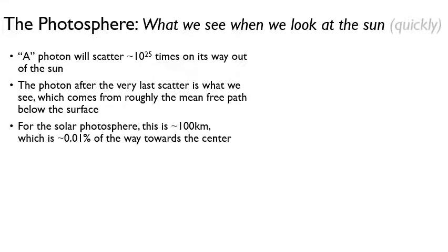If you consider the sun, the solar photosphere, this is about 100 kilometers from what you might call the surface. The surface is a little bit hard to define because it's a gas. And so there's like a density gradient there. But ballpark, we're talking 100 kilometers from the surface. That's the last photon you see. That may sound like a far distance, but it's only 0.01% towards the center. So you're really seeing the very surface of the sun.